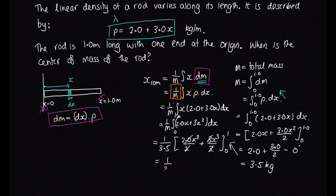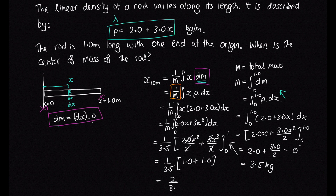Evaluating from 0 to 1: we get 1 over 3.5 times (1² + 1³) = 1 over 3.5 times 2. When we substitute 0, both terms are 0. So we get 2 over 3.5, which equals 0.57 metres. We've now located our centre of mass.